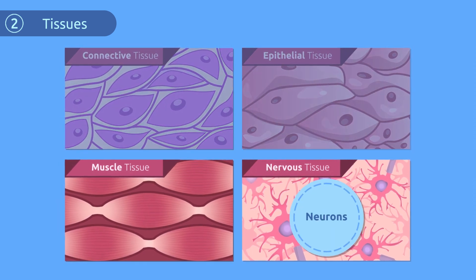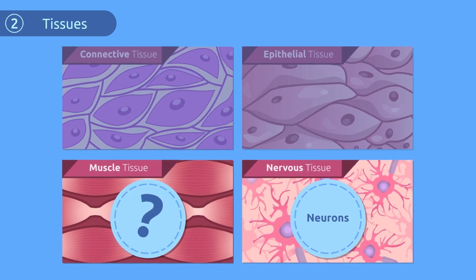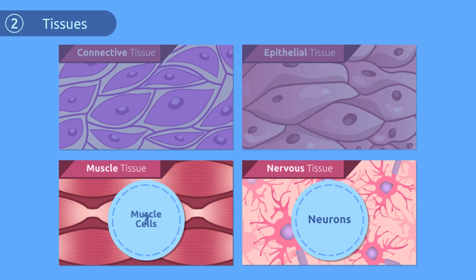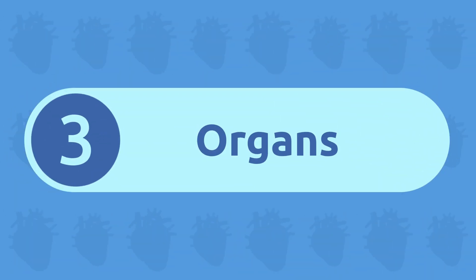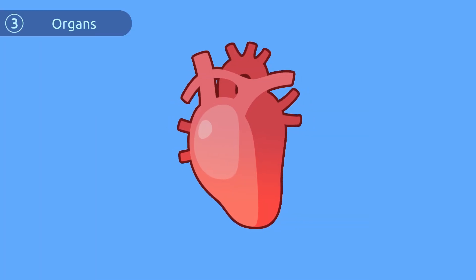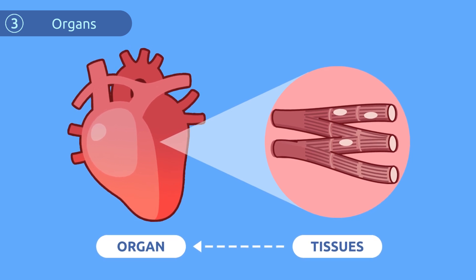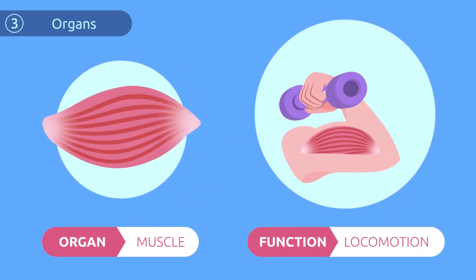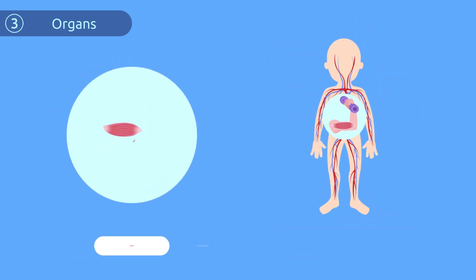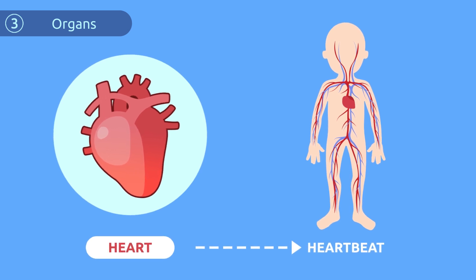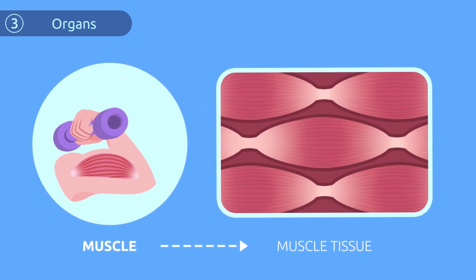The nervous tissue cells are called neurons. Can you guess what muscle tissue cells are called? Very good — they are called muscle cells! Organs are made up of tissues. Organs work together to carry out the same function. These functions can range from locomotion, which means movement, all the way up to a heartbeat. One example is a muscle, which is made up of muscle tissue.